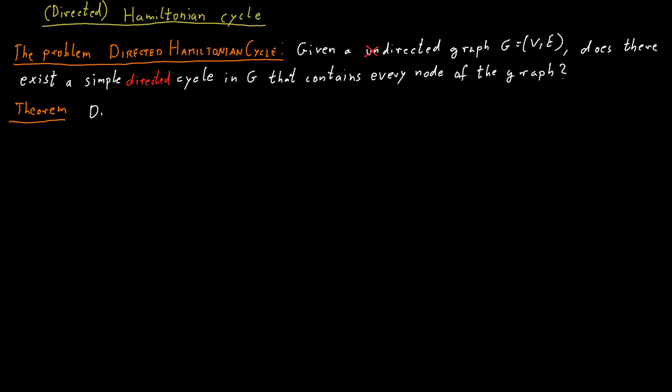We claim that directed Hamiltonian cycle polynomial time CAP reduces to undirected Hamiltonian cycle. The reduction is not overly complicated; clearly these two problems are very related to one another.